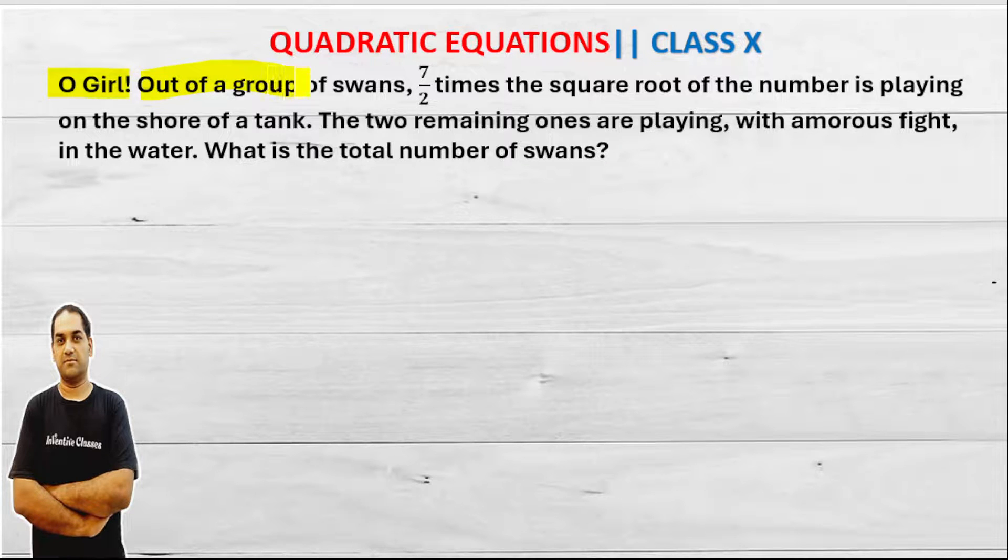Out of a group of swans, seven by two times the square root of the number is playing on the shore of a tank and the remaining two ones are playing with enormous fight in the water.